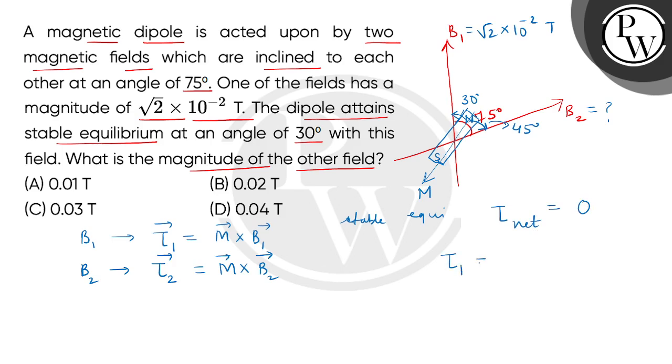So what can we write? Tau1 magnitude-wise is M B1 sin theta1, and tau2 we can write as M B2 sin theta2. So M cancels.